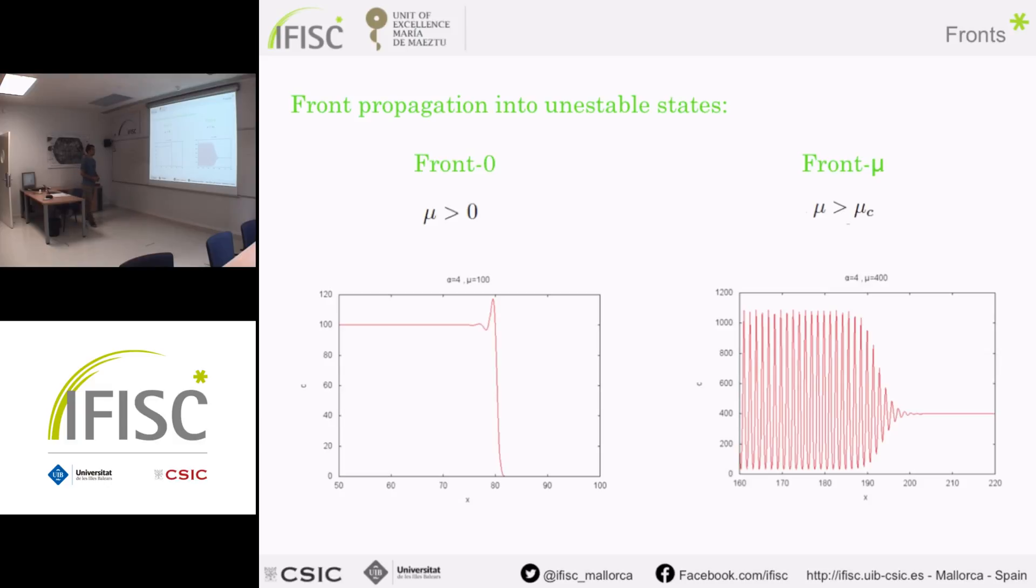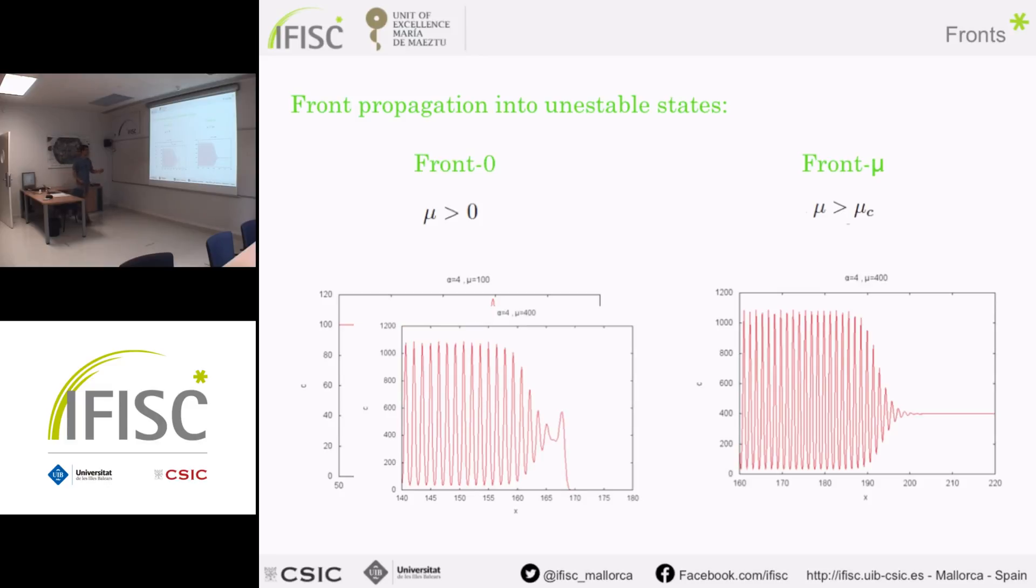We can look at the fronts that spread over this unstable state. The front-0 is always possible in these equations since the zero state is unstable. Depending on the mu value and alpha value, it can leave behind a homogeneous state or a pattern, but the front-0 is the same.